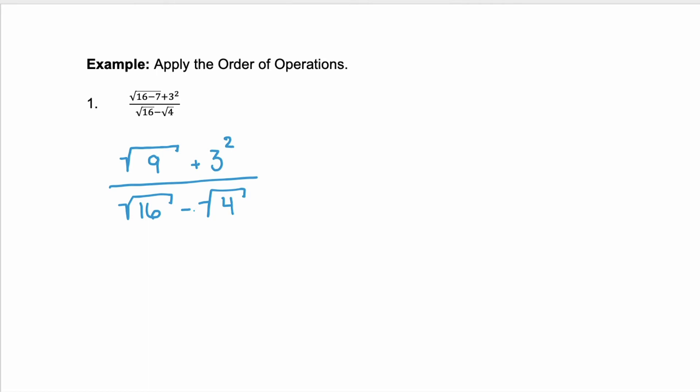So we did parentheses. Next would be our exponents. Exponents are going to be this three squared, as well as taking the square root of nine, 16, and four. So let's do each of those. The square root of nine is three. Three squared is three times three, which is nine.